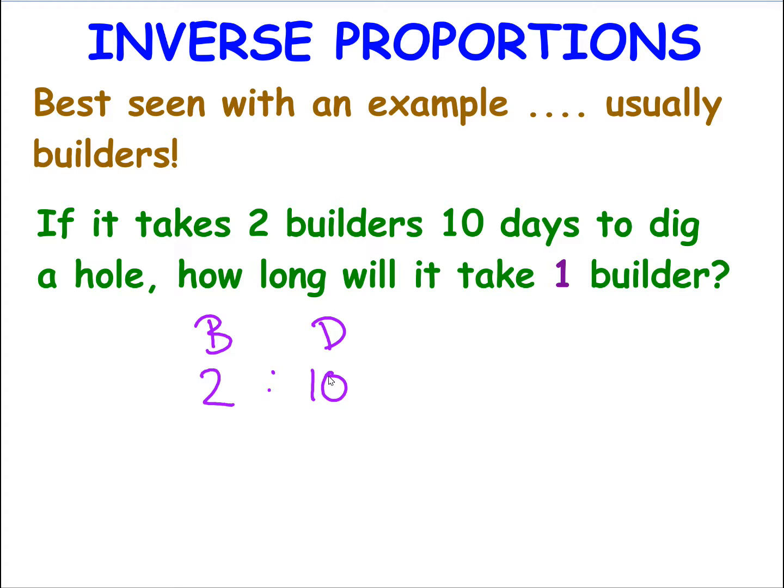Now, how long will it take one builder? So I'm going from two builders to one, so I'm dividing by two. Now, if you reduce the number of builders, you would expect the number of days to increase. So if I have less builders, it's going to take a longer time. So instead of dividing by two, we multiply by two. So one builder would take twenty days.